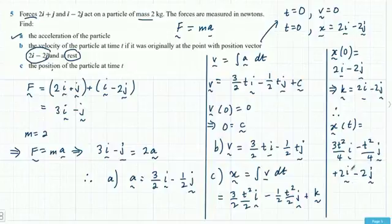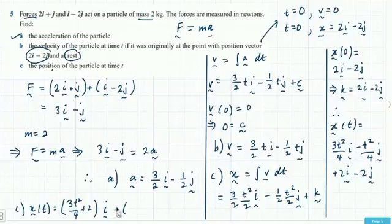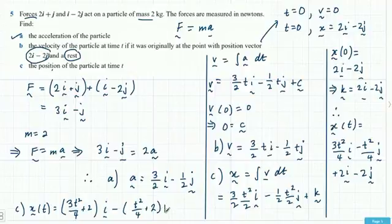Tidying up, the position vector X of t equals 3t squared on 4 i minus t squared on 4 j plus 2i minus 2j. You can factor to write it as 3t squared on 4 plus 2 all in i, and negative of t squared on 4 minus 2 in j. That's the position of the particle at time t.